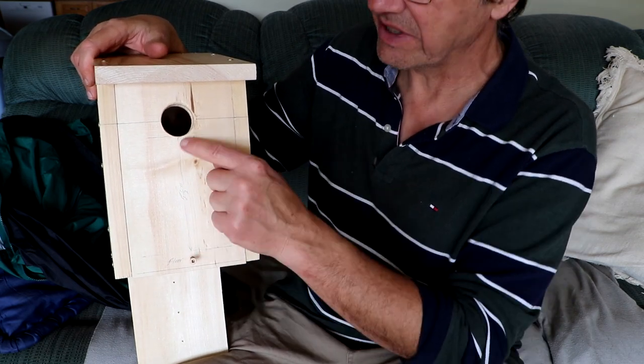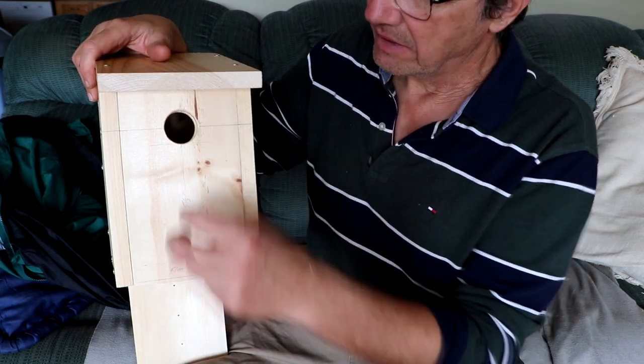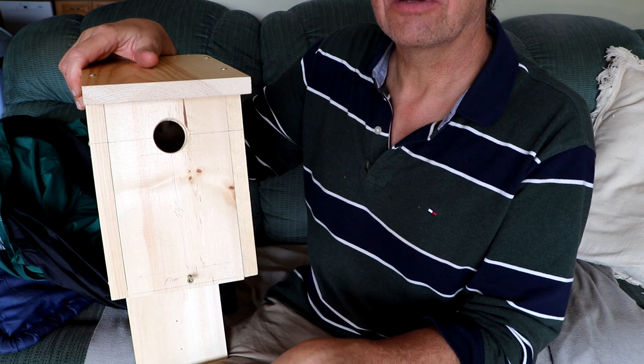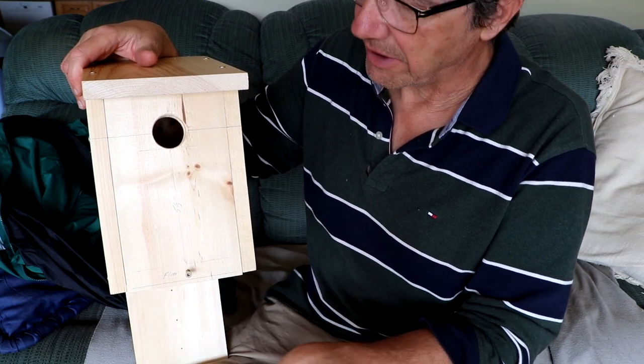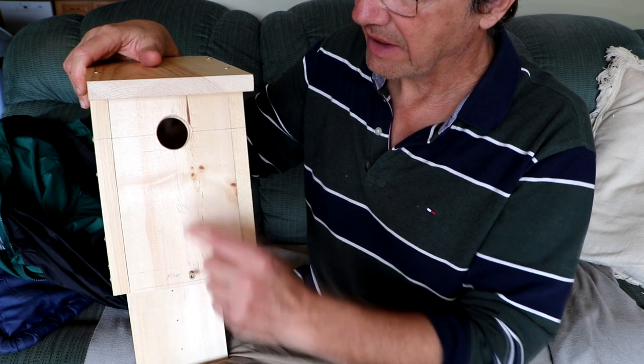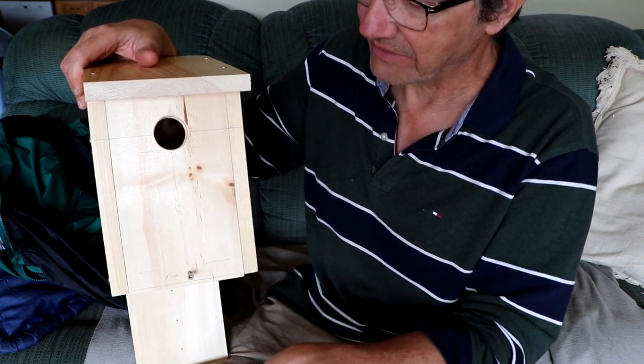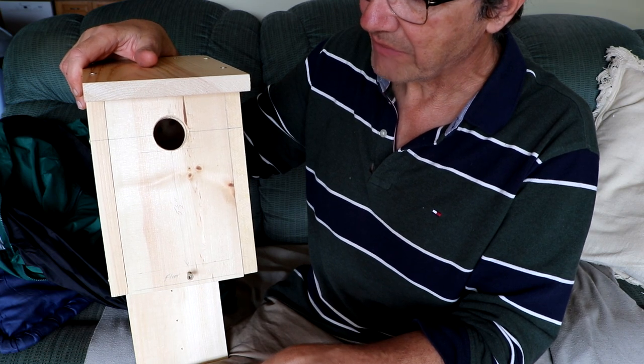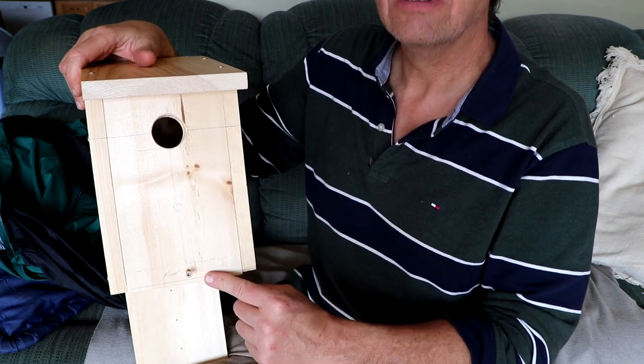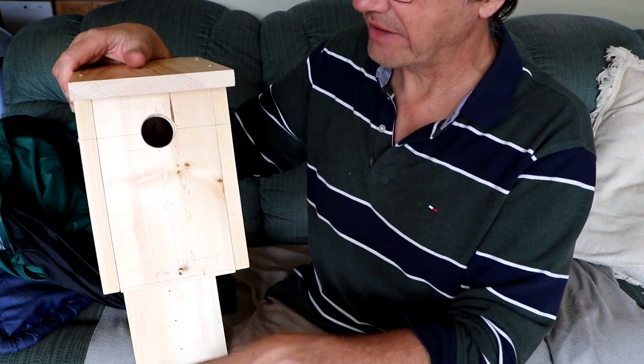That gives the birds inside enough depth to keep out of the way of certain birds that might be looking in there like starlings or other predators that might just get part way in. It gives them some depth to keep hidden at the back of the box in safety. So, nine inch front by the standard one by six board size.